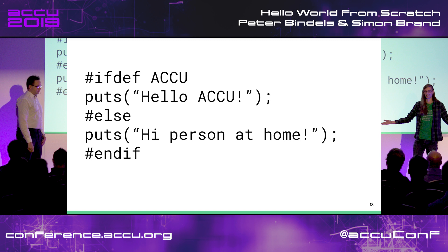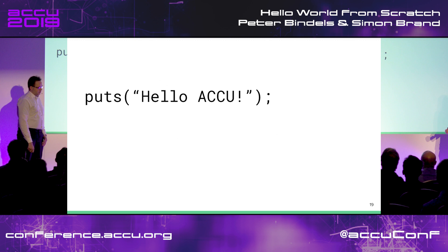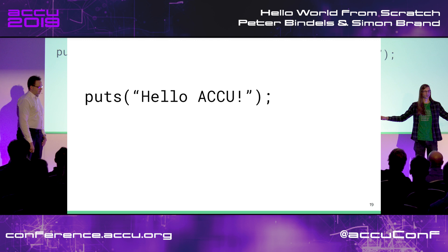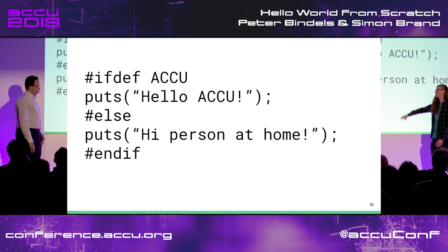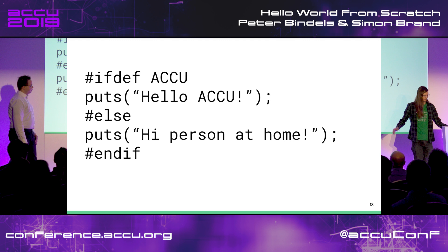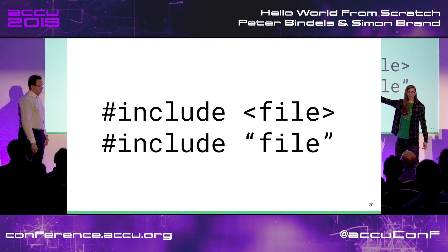Another thing we might see are ifdefs. We have some condition: if ACCU is defined, then hi ACCU! But if you're watching at home, we won't say hi. What the preprocessor does is literally remove any code in the not-taken branch. The compiler does not see the else branch at all. We could put nonsense in there, we could put poetry, we could put a MIDI file in the else block and the compiler would never see it. It doesn't even need to be text — it could be a binary blob, as long as it ends with a newline, a hash, and an endif.